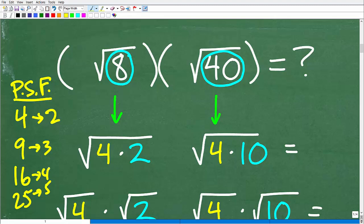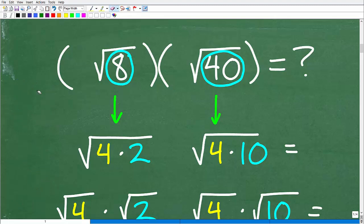So when we're looking at factors of these respective numbers, we're asking ourselves, hey, do these numbers have any perfect square factors? Because if they do, we want to rewrite these values as products of a perfect square factor and whatever else. So let's take a look at 8 here.